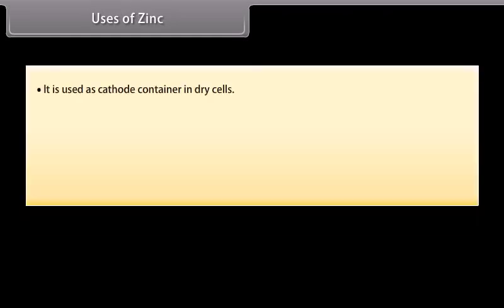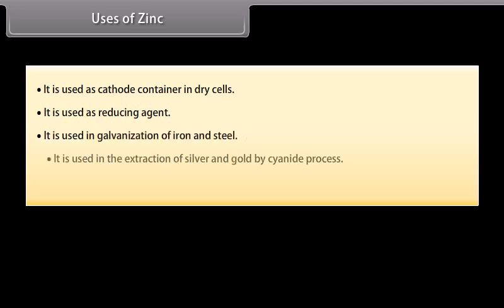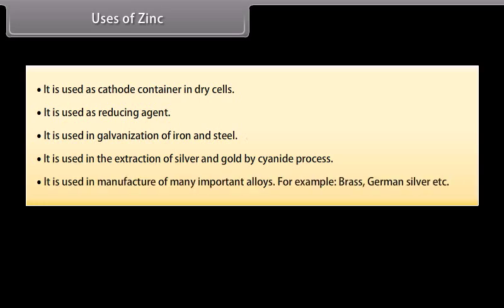Uses of zinc. It is used as cathode container in dry cells. It is used as reducing agent. It is used in galvanization of iron and steel. It is used in the extraction of silver and gold by cyanide process. It is used in manufacture of many important alloys. For example, brass, german silver, etc.